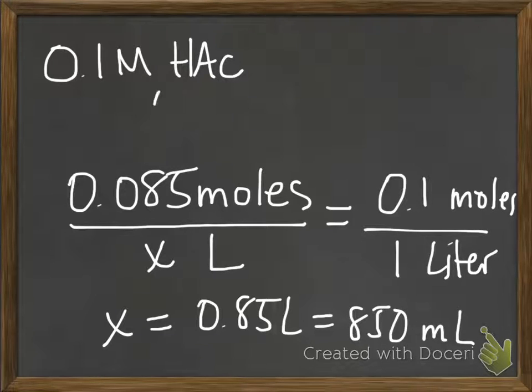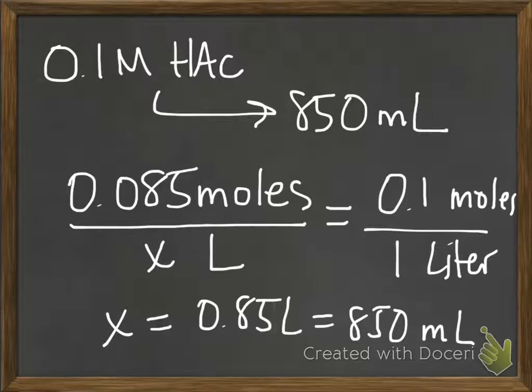So we just figured out that you need 850 mils of this original acetic acid solution to add with acetate to get your total of 1 liter at pH 4.